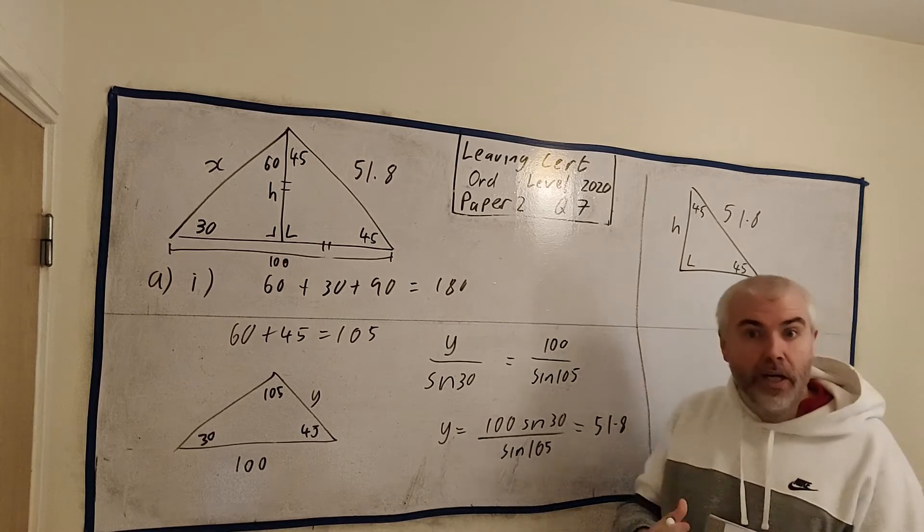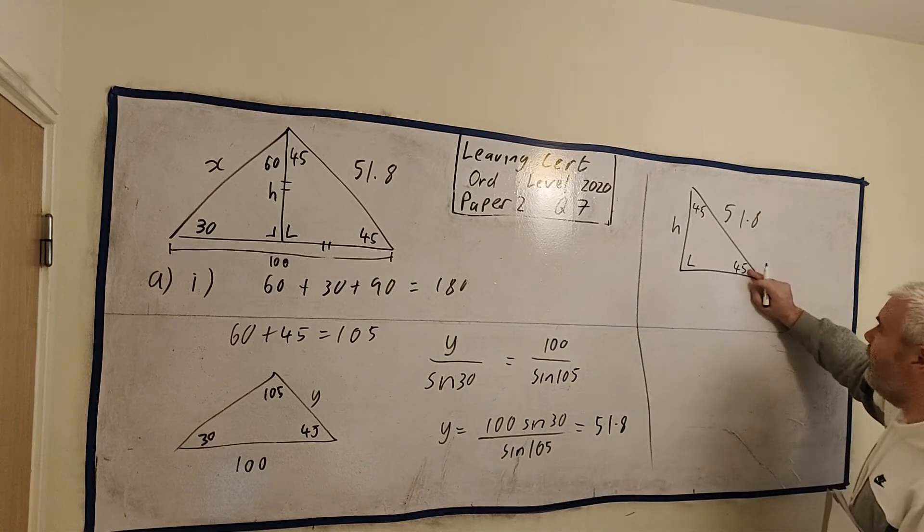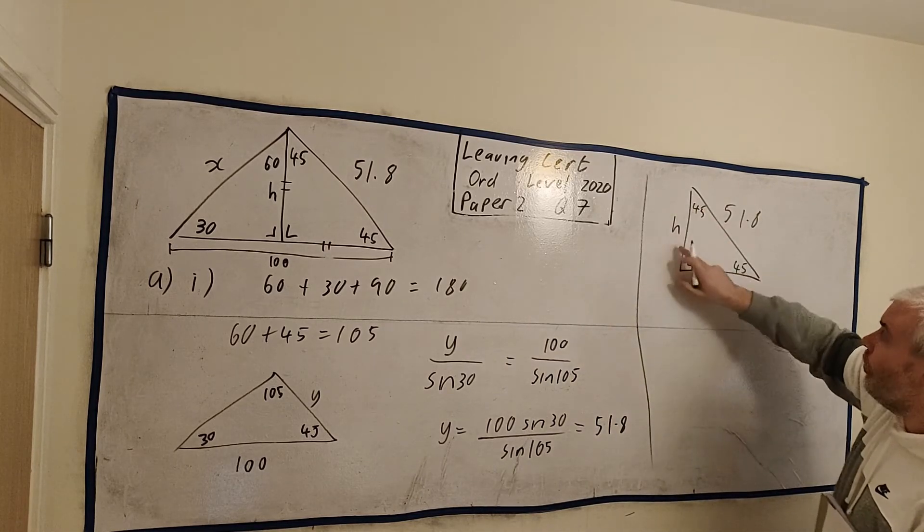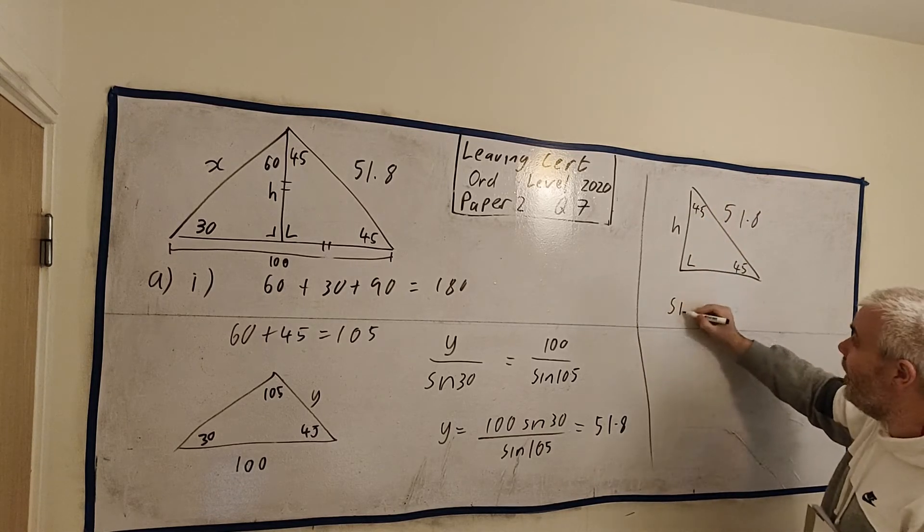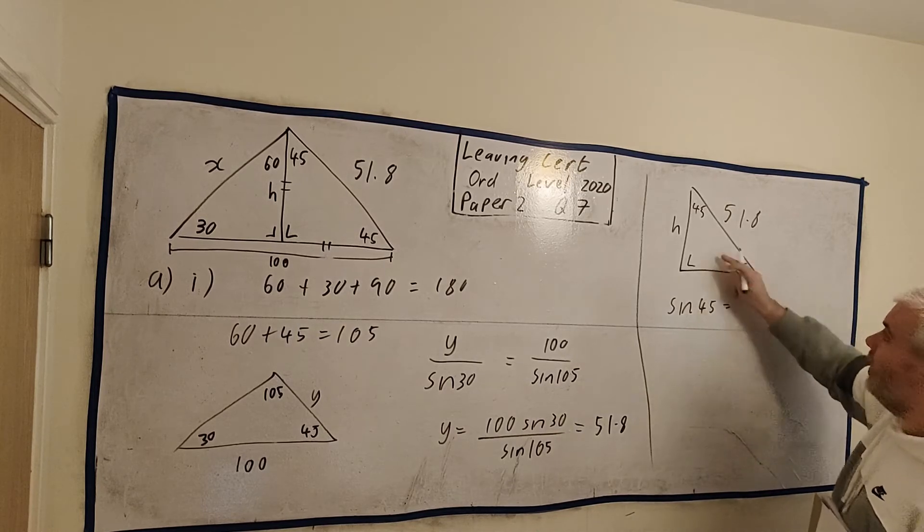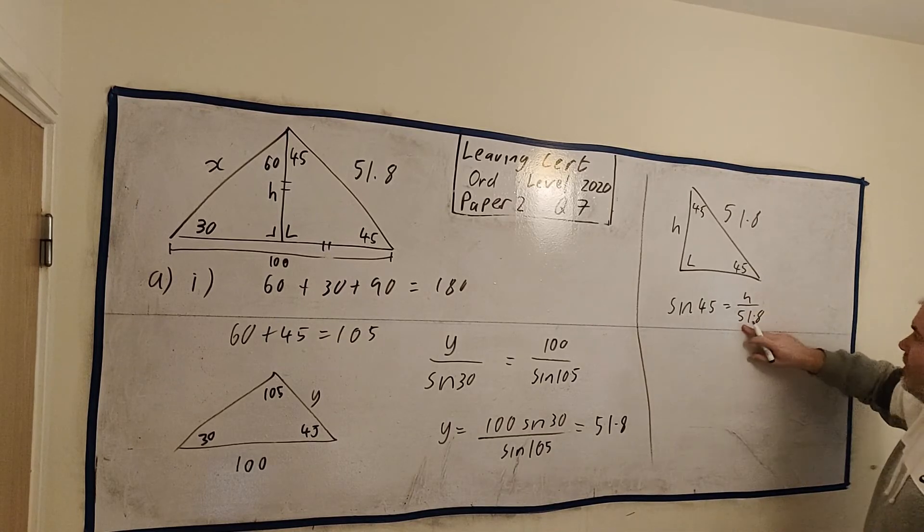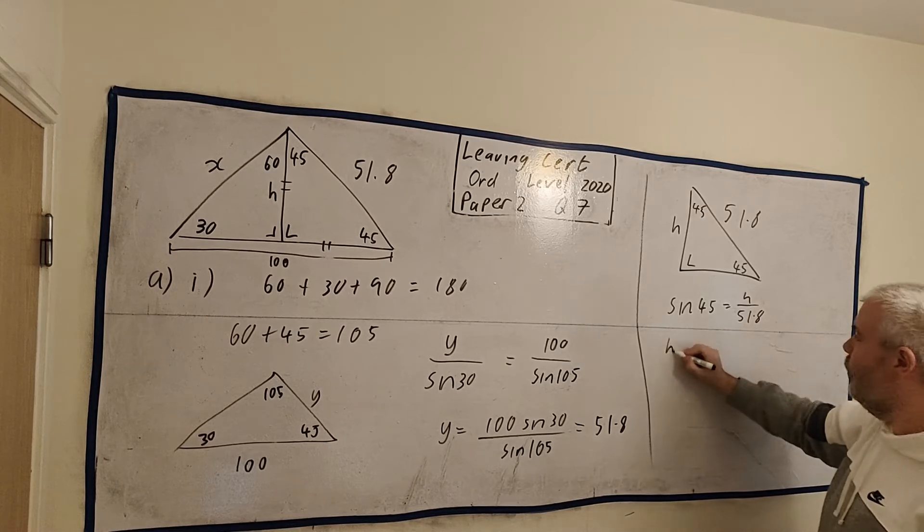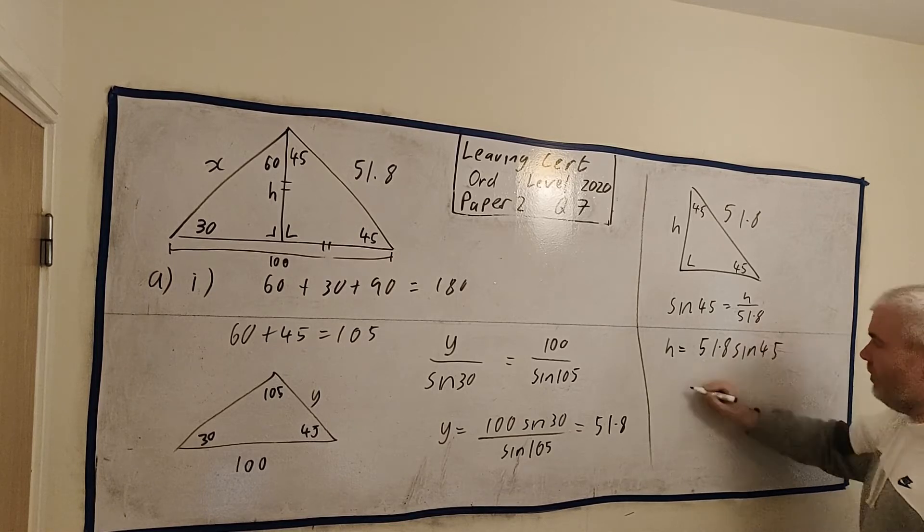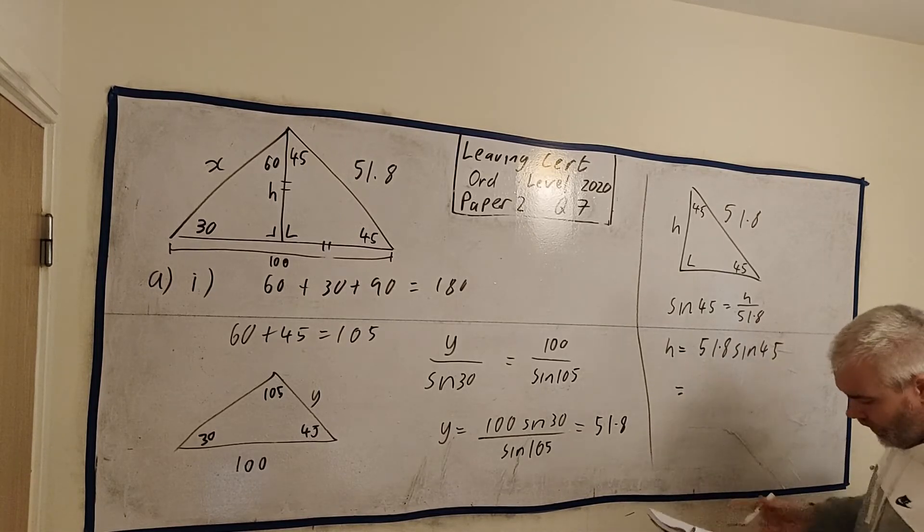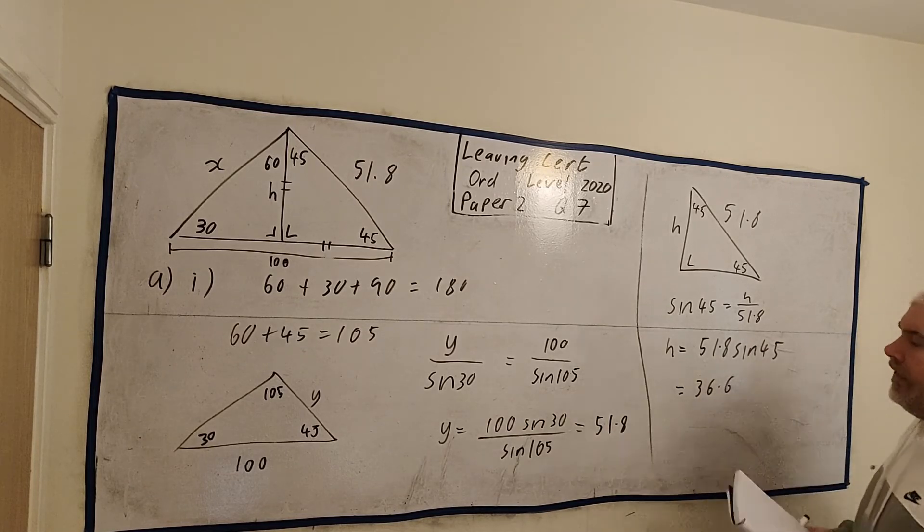Because I now use one of my right angle triangles, sine, cosine, or tangent. So I have an angle here. I have a length across from it that I want to know. And I know the hypotenuse. So the one I would use is sine. Sine of an angle is equal to the opposite divided by hypotenuse. If I rearrange this, the 51.8 multiplied here, we get H is equal to 51.8 multiplied by sine 45. If I go ahead and put that into a calculator, I will get 36.6.